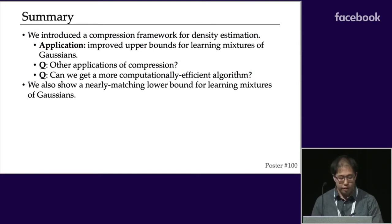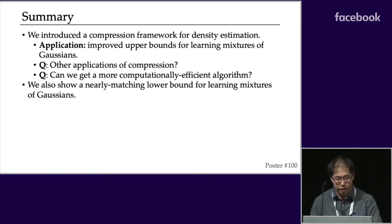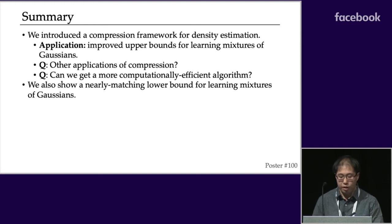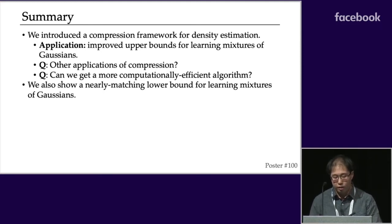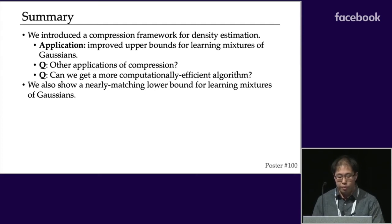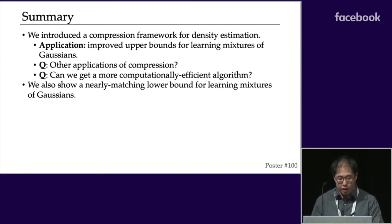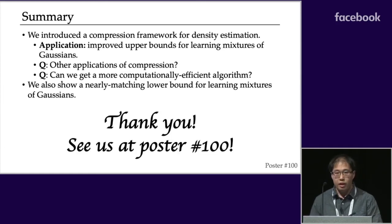To summarize: we introduced a compression framework for density estimation. It's quite powerful — it gives nearly tight upper bounds for learning mixtures of Gaussians. Future directions include applying these compression ideas to other density estimation problems, seeing whether analogous statements hold for other complexity notions like VC dimension, and making our algorithm computationally efficient. We also have a nearly matching lower bound. If you'd like to know more, we'll be at poster 100 — thanks!